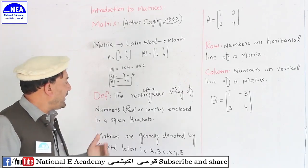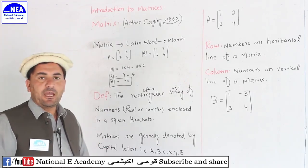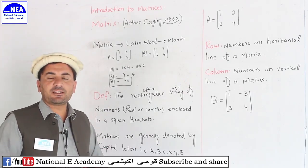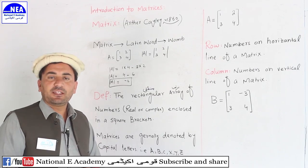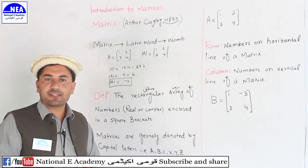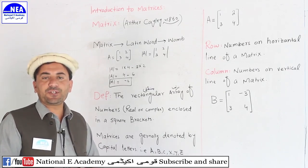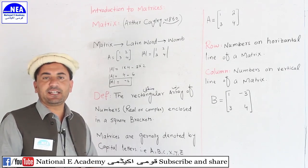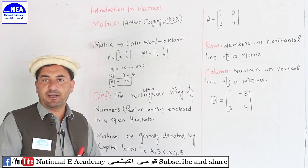Now, the definition: 'A rectangular array of numbers enclosed in square brackets is called a matrix.'